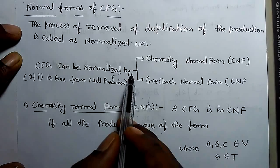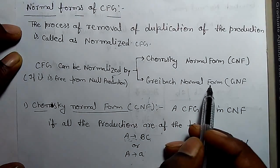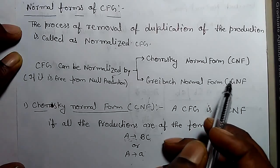Context-free grammar can be normalized by Chomsky Normal Form (CNF) or Greibach Normal Form (GNF).